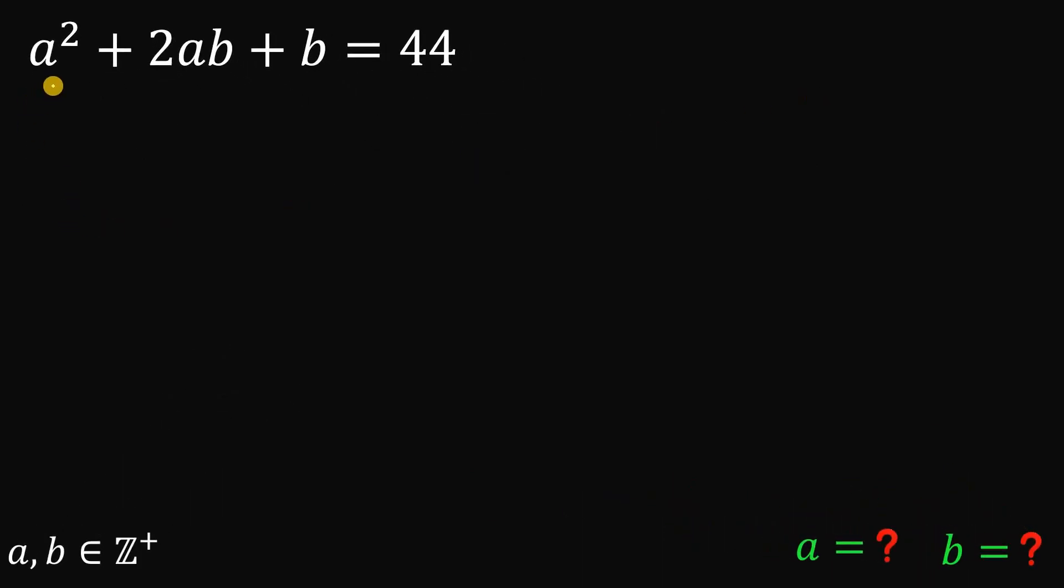Alright, so given this equation, a squared plus 2ab plus b equals 44, wherein a and b are both positive integers, the goal is to find the value of a and b. How to answer this kind of question? This is what we call a diophantine equation because we only have one equation and we have two variables.